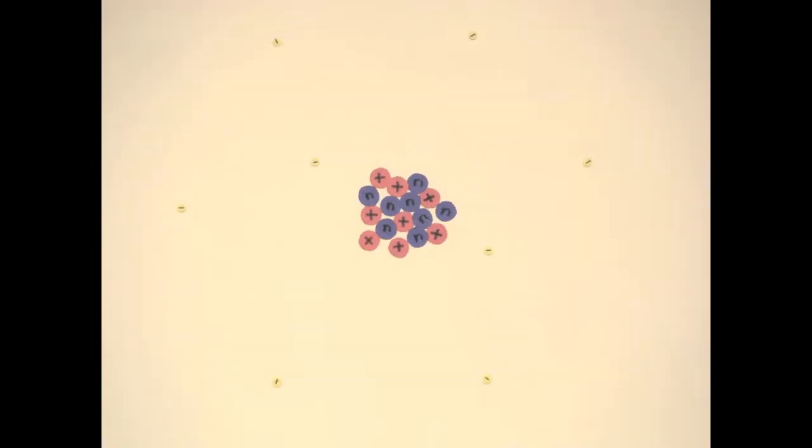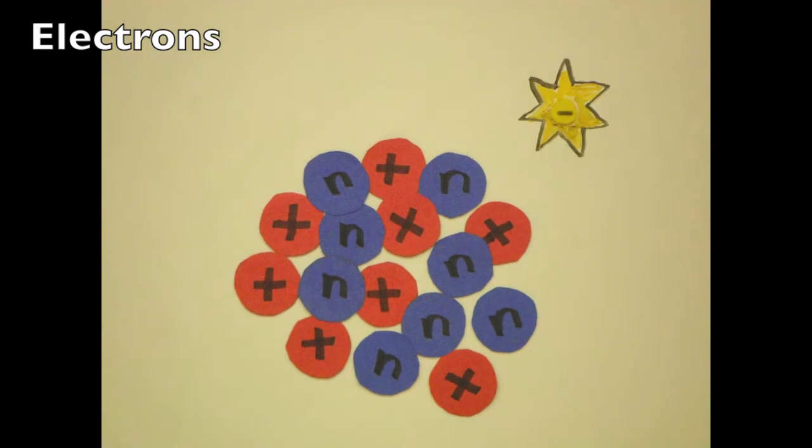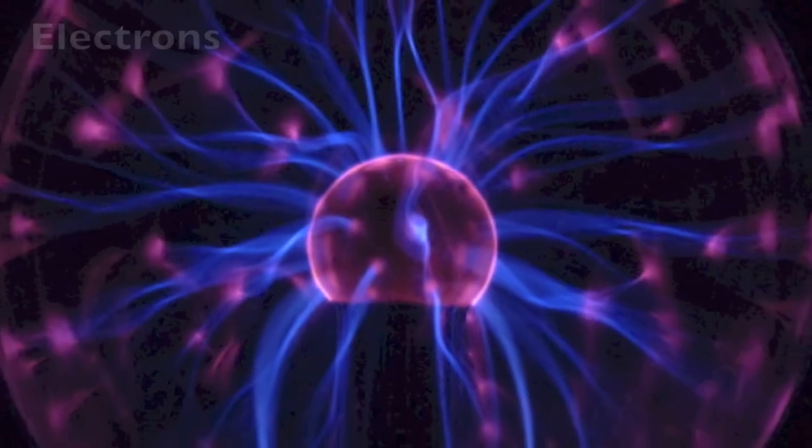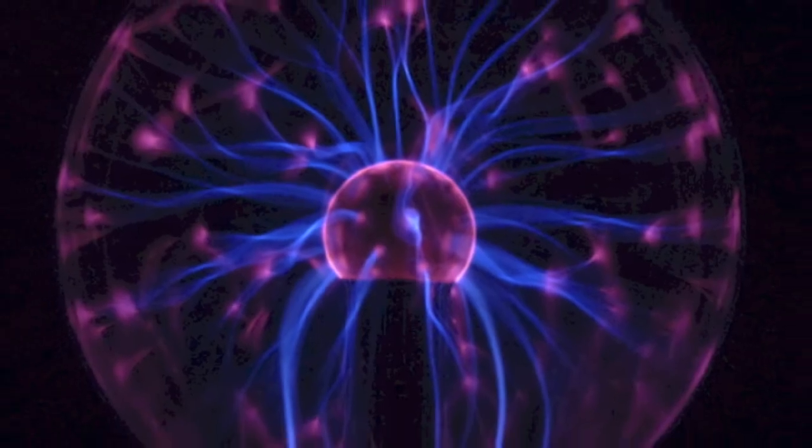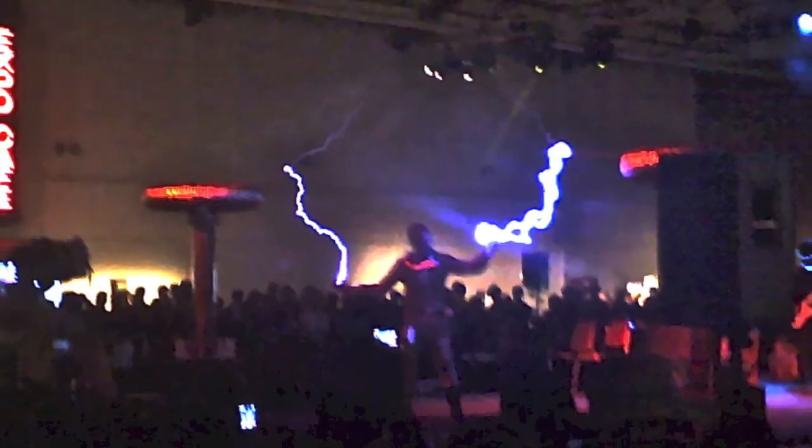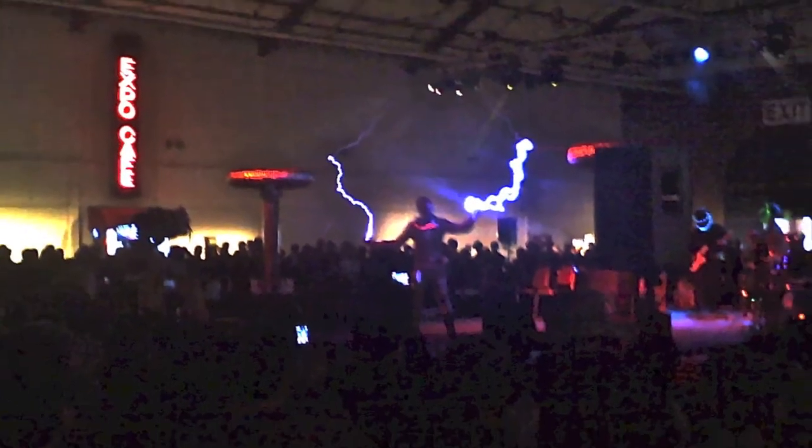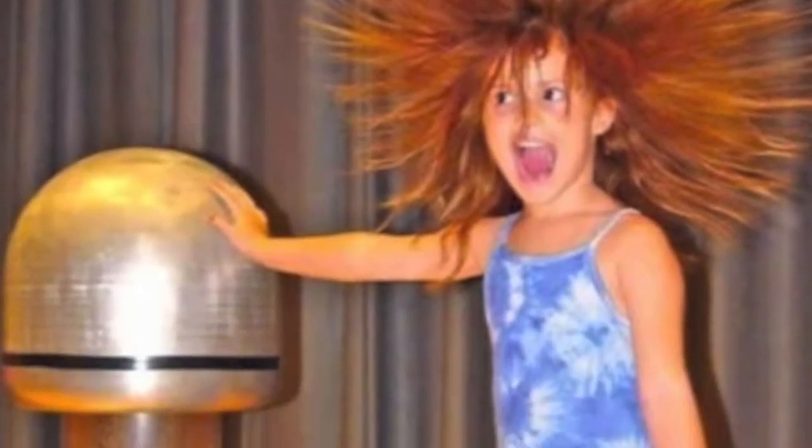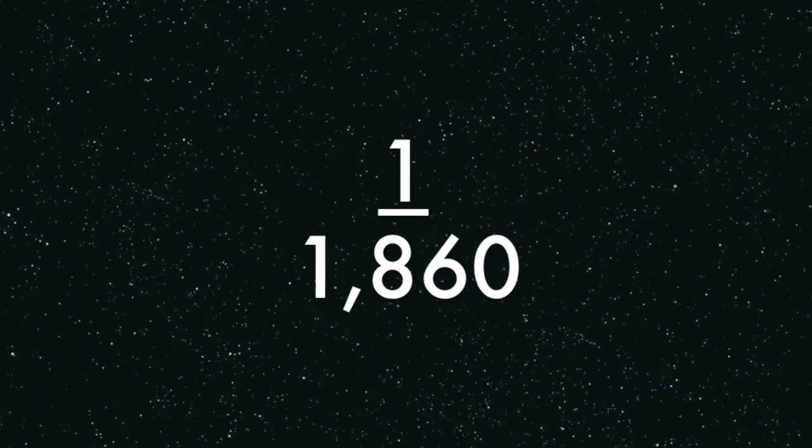Amazingly, the atom is mostly empty space since the outer layers of the atom are made of nearly massless but very energetic particles called electrons. Electrons carry an electrical charge, which is ultimately where we get our electricity from. Electrons carry a negative charge and are 1/1860th the mass of the particles in the center of the atom, which is called the nucleus.